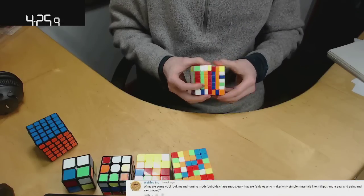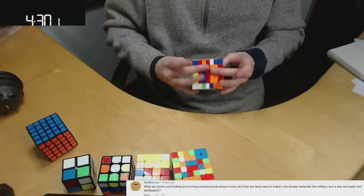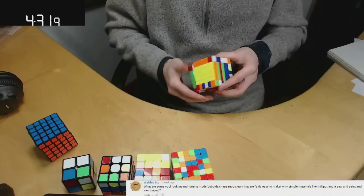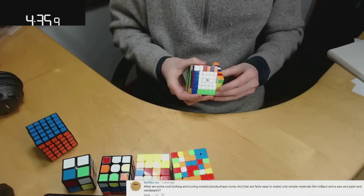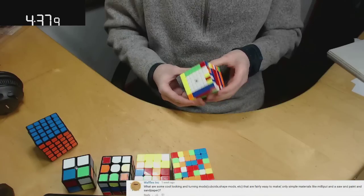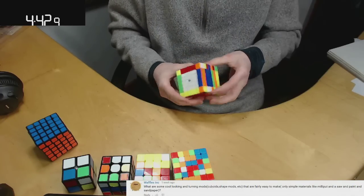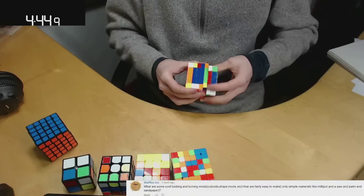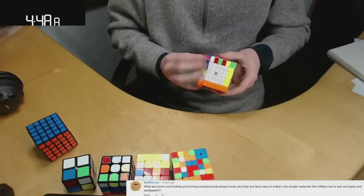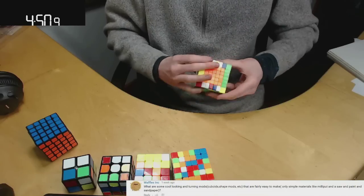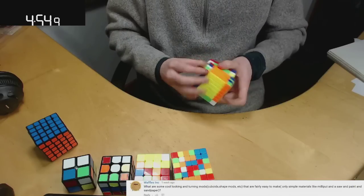What are some cool looking and turning mods, cuboids, shape mods, etc. that are fairly easy to make with only simple materials like Milliput and a saw and paint and sandpaper? You know, the barrel cubes are pretty fun to make. A really simple mod would be like the corner turning puzzles that I did, like I did a 5x5 corner turner. Those are pretty fun, or at least they're kind of a cool little novelty. So maybe something like that. Barrel cube though was fun.